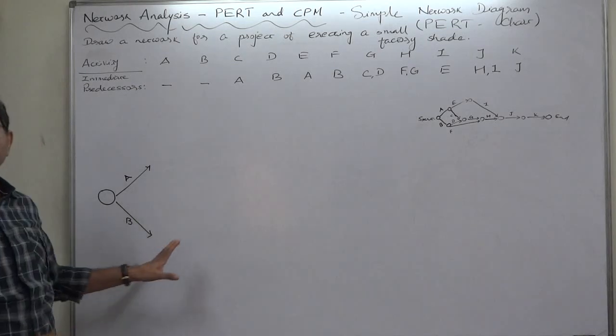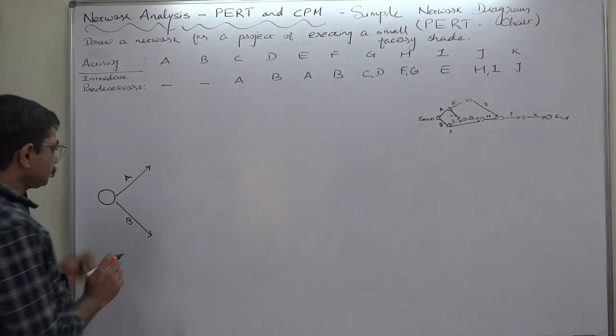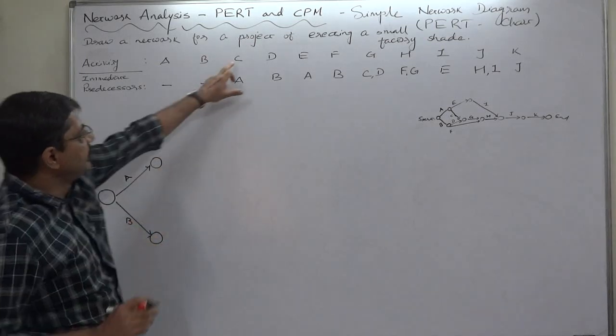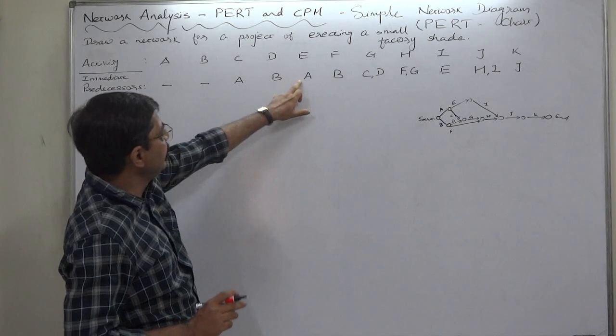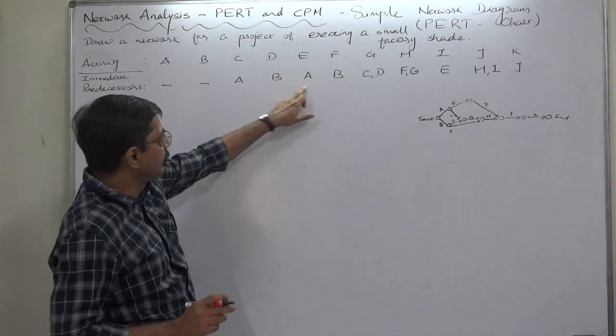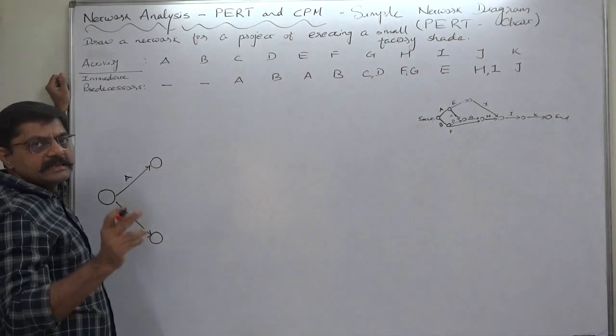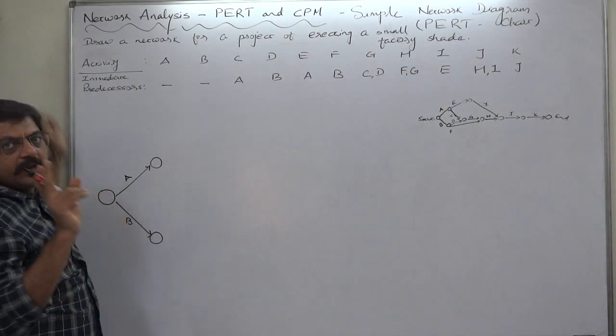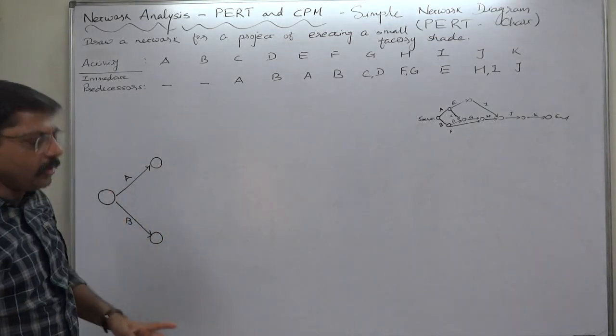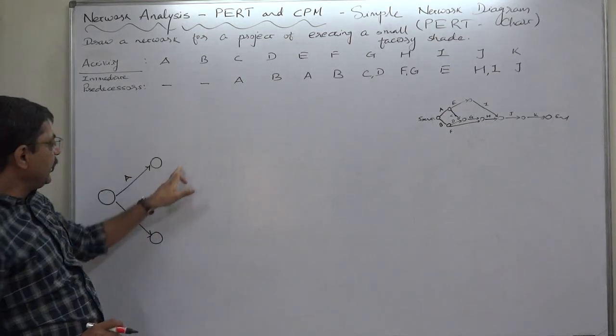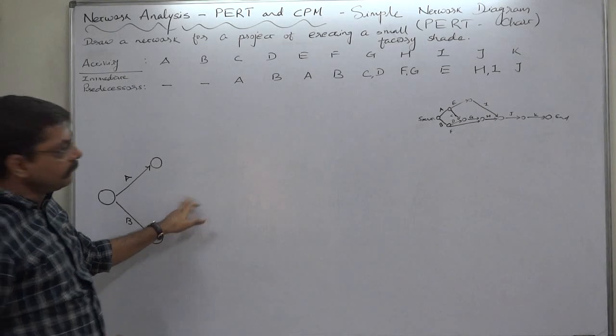C and E both are successors of A, so we can draw two arrows. But which one will be C and E? If we follow vertical order, C will be upper side and E will be lower side. But see this thing...